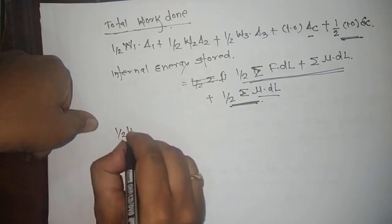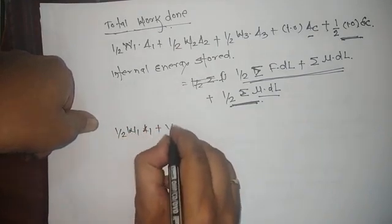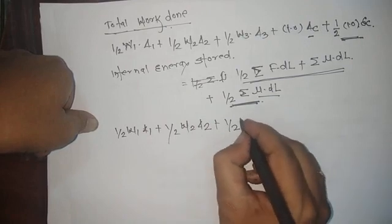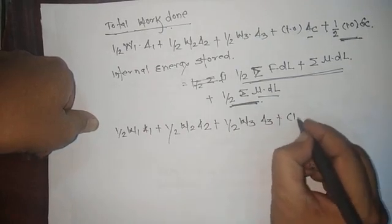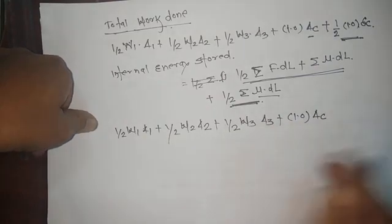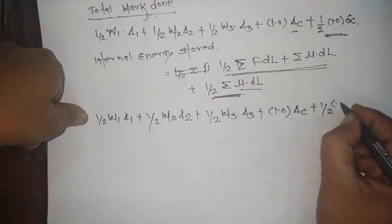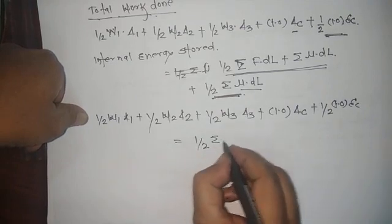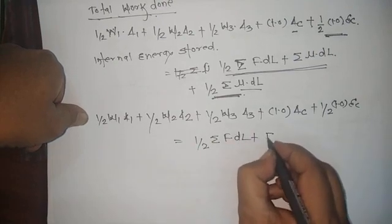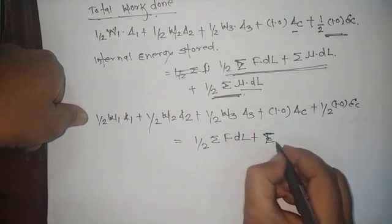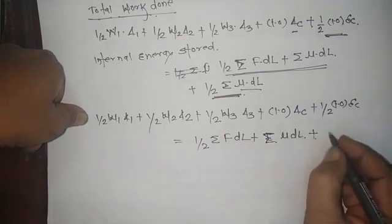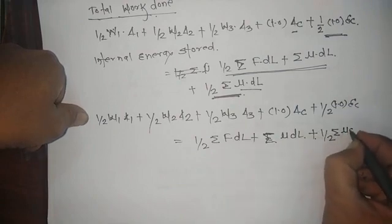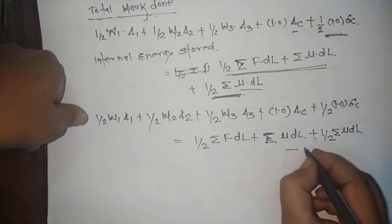Setting up Equation 3: the total external work is ½W1·δ1 + ½W2·δ2 + ½W3·δ3 + 1·δC, which equals the total internal energy: ½ΣF·δL + Σμ·δL + ½Σμ·δL. Call this Equation 3.